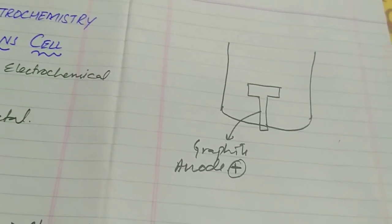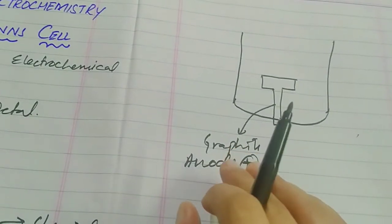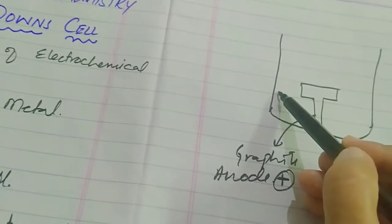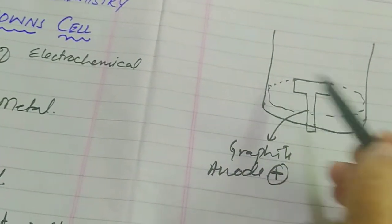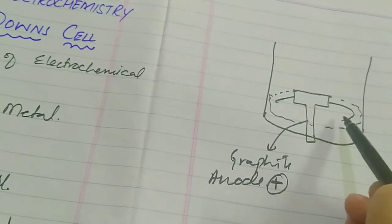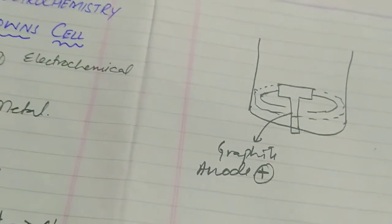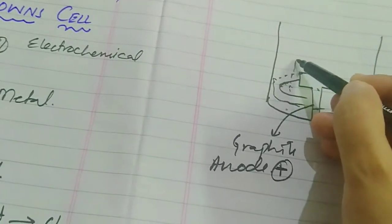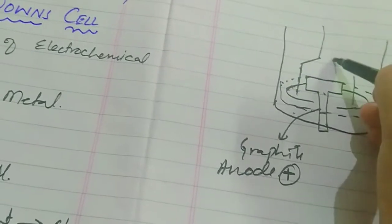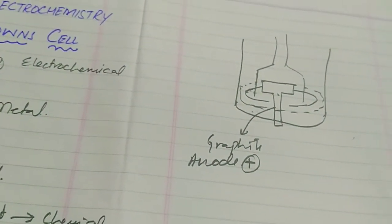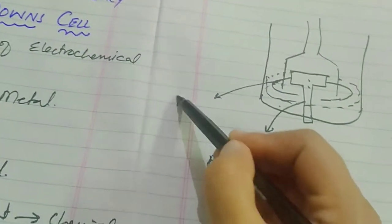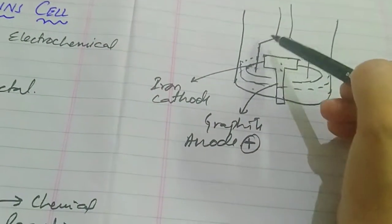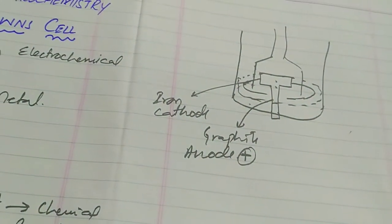The anode is connected to the positive terminal of the battery. The other electrode is the cathode, which is made of iron. Iron sheets are placed, and there are two of them. The cathode is the iron electrode. The anode is made of graphite and the cathode is made of iron.